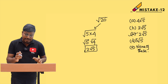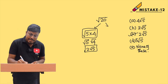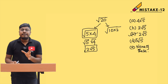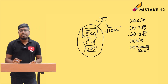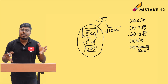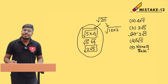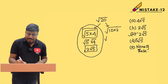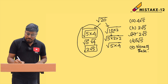The mistake I've seen some students make is writing 20 as 10×2 instead of 5×4. Both equal 20, but with 10×2, they can't simplify further and wrongly choose 'none of these.' The fix: split 10 further as 5×2, giving √(5×2×2) = √(5×4) = 2√5. So always keep expanding until you reach a perfect square factor.